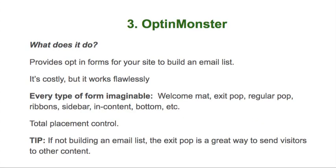Number three is OptinMonster. If you build an email list — and I don't recommend every niche does, because I'm in niches where I've built lists and they are worthless — it's usually worth trying to see if you can make it work. For niches serving a business community, like Fat Stacks Blog, building a list is absolutely important. But if you're going to try to build a list, OptinMonster is the best.